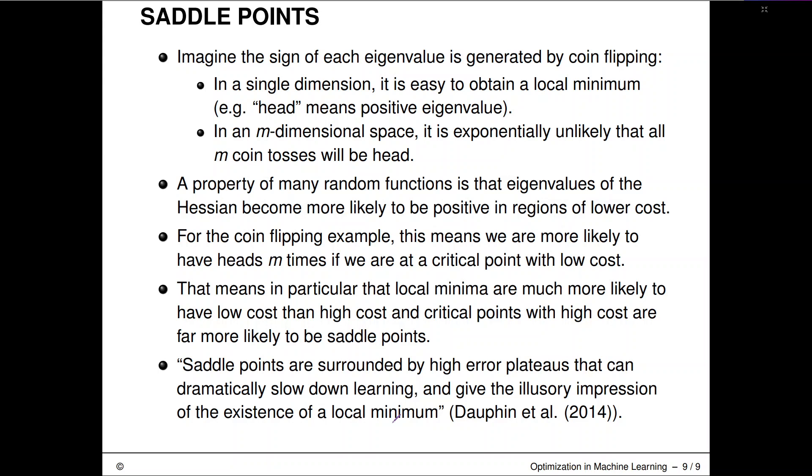While if we reach a local minimum in an error landscape of a neural network, usually the local minimum, although it might not be globally optimal, usually has a good value. This is also a reason why in neural networks, although the function is quite multimodal, we usually do not do too many restarts or restarts at all of gradient descent and are okay with converging into a local minimum. We are not okay with getting stuck in a saddle point.